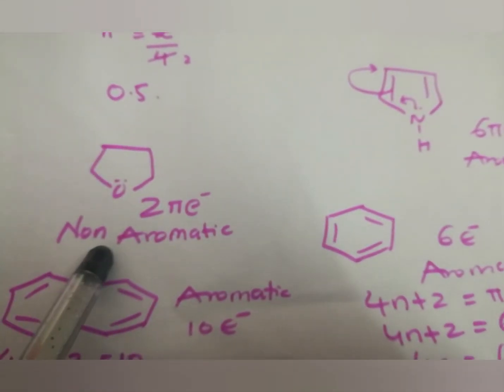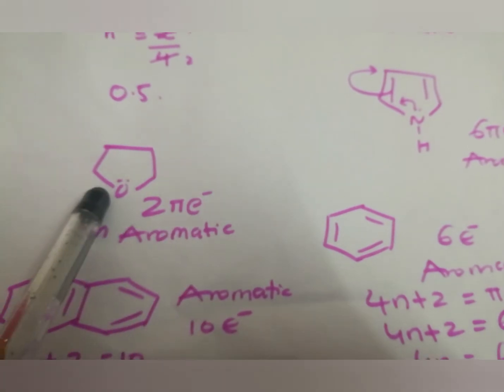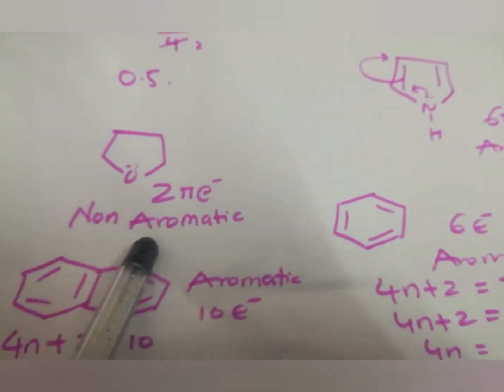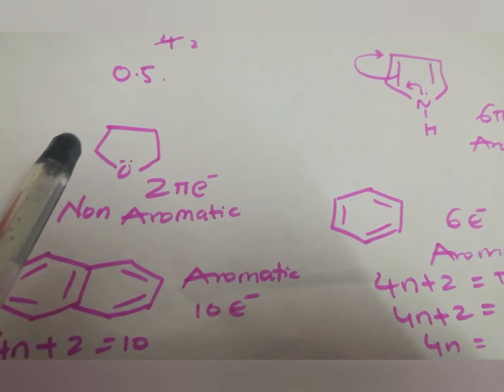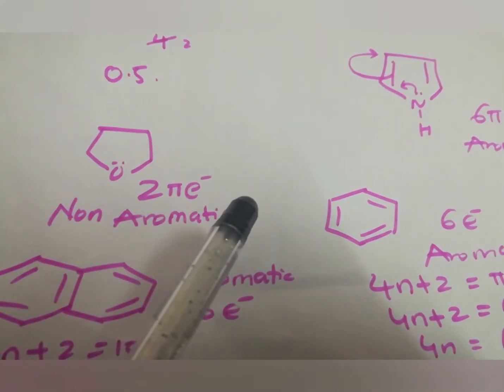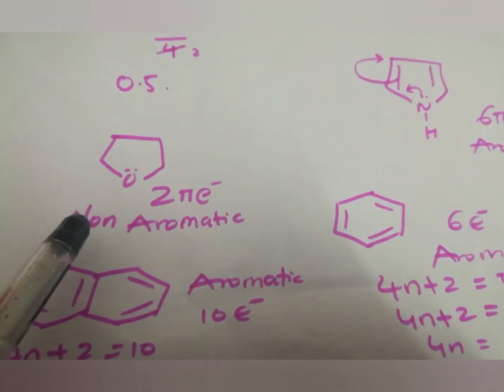This structure is also 2 pi electron as the lone pair we calculate. But, it is non-aromatic because it does not follow Hückel's rule as it does not undergo resonance.